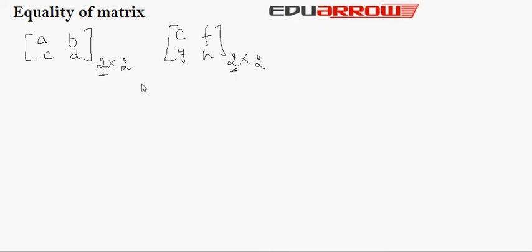Also, both are square matrices, and here element A of matrix A will be equal to element E of matrix B.